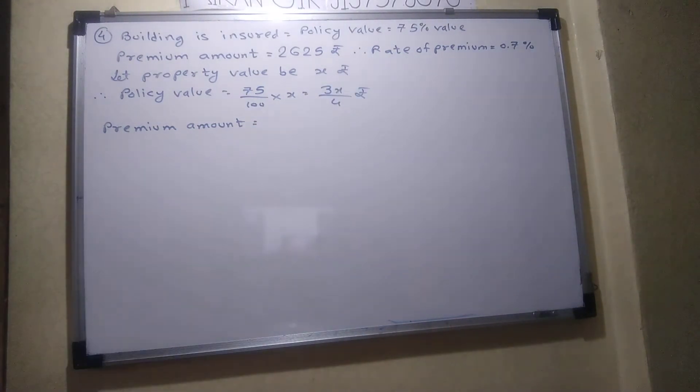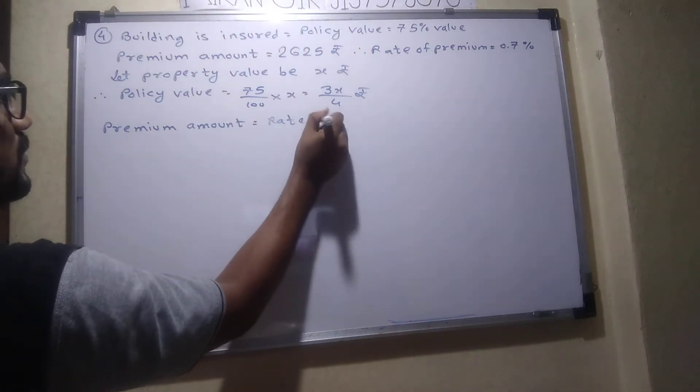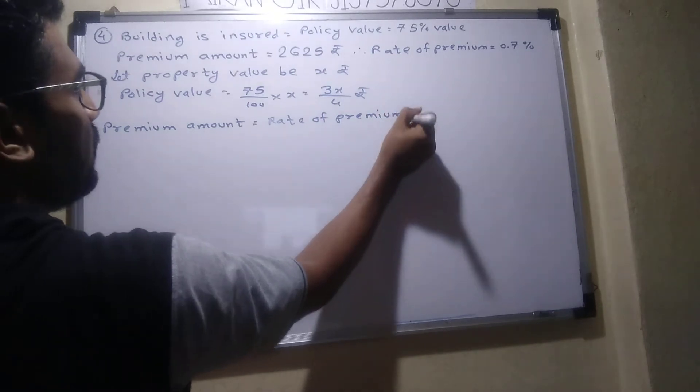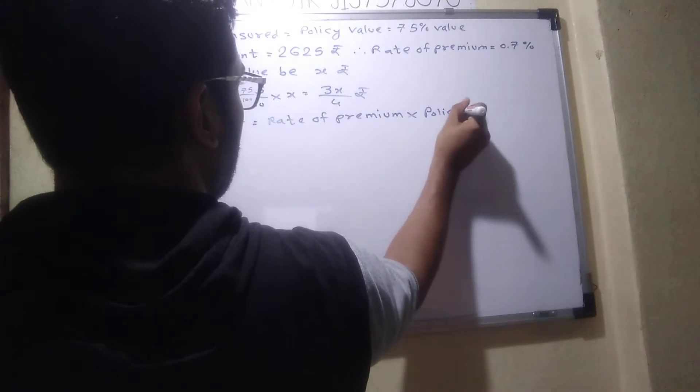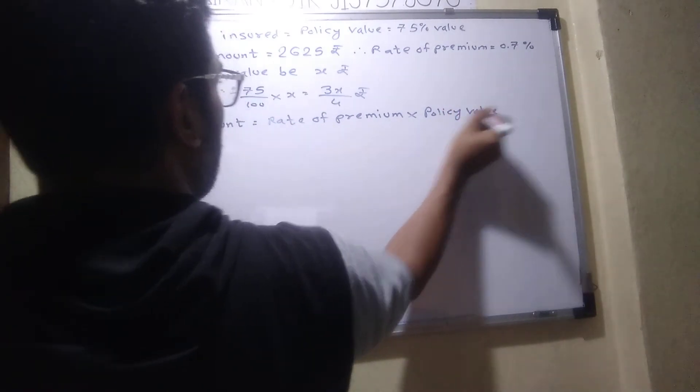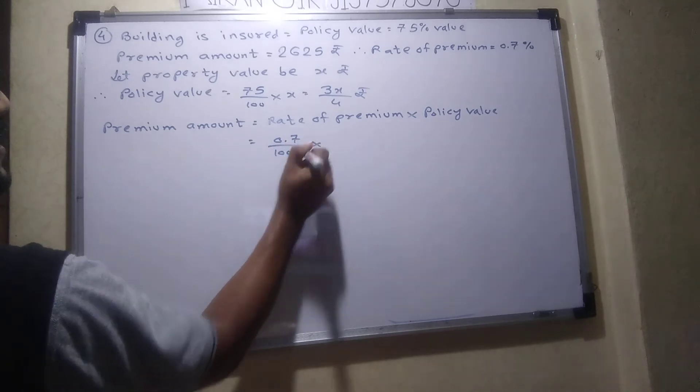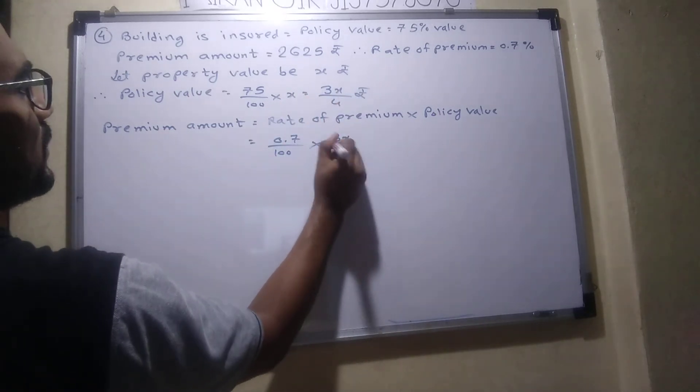What is the formula for premium amount? Premium amount is rate of premium multiply by policy value. So what is the rate of premium? 0.7%. And what is the policy value we got? 3x by 4. Agreed?